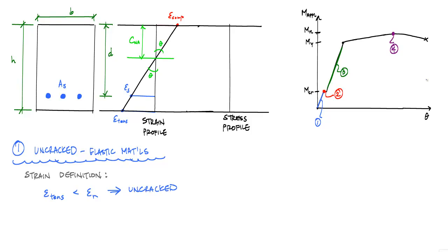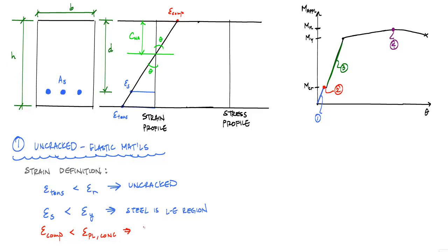Since my materials are linear elastic, this has implications on the strain in my concrete in compression and the steel strain in tension. My steel strain is linear elastic, which means it has not yielded — that's epsilon y — so the steel is still in the linear elastic region. The compressive strain of the concrete at the top fiber is less than the proportional limit in compression for concrete, which is analogous to a yield strain. Concrete doesn't have a very well-defined yield point, so this implies the concrete in compression is also linear elastic.